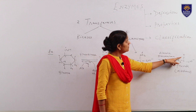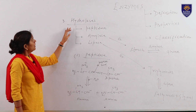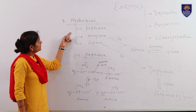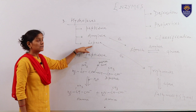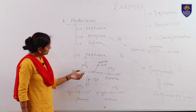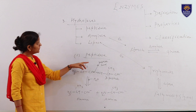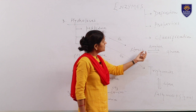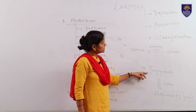Hydrolases are the third class of enzymes. These enzymes participate in hydrolytic reactions, meaning they cause hydrolysis of a substrate molecule. There are three main subclasses of hydrolases: peptidases, amylases, and lipases. Peptidases cause hydrolysis of the peptide bond present in dipeptides to give simple amino acids. Amylases cause hydrolysis of carbohydrates — that is starch — into the simple molecule glucose. Lipases cause hydrolysis of triglyceride molecules into fatty acids and glycerol.